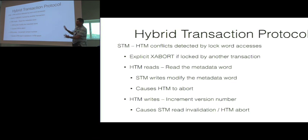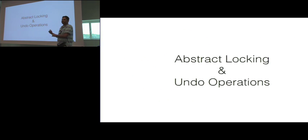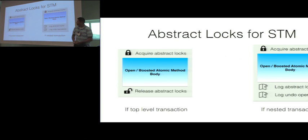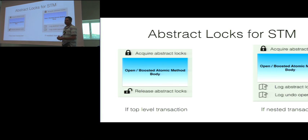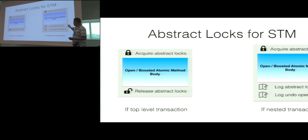That covers physical locking, but what about abstract locking? In open nested transactions, when the nested transaction commits, you release all the physical-level locks but need to grab abstract locks. In a classical STM, you first acquire the abstract locks, execute the method body, then release them if it's a top-level transaction. For a nested transaction, you acquire the abstract locks and at commit point you log the abstract locks along with the undo operations. The question is whether we can do better in the case of a hybrid transaction.